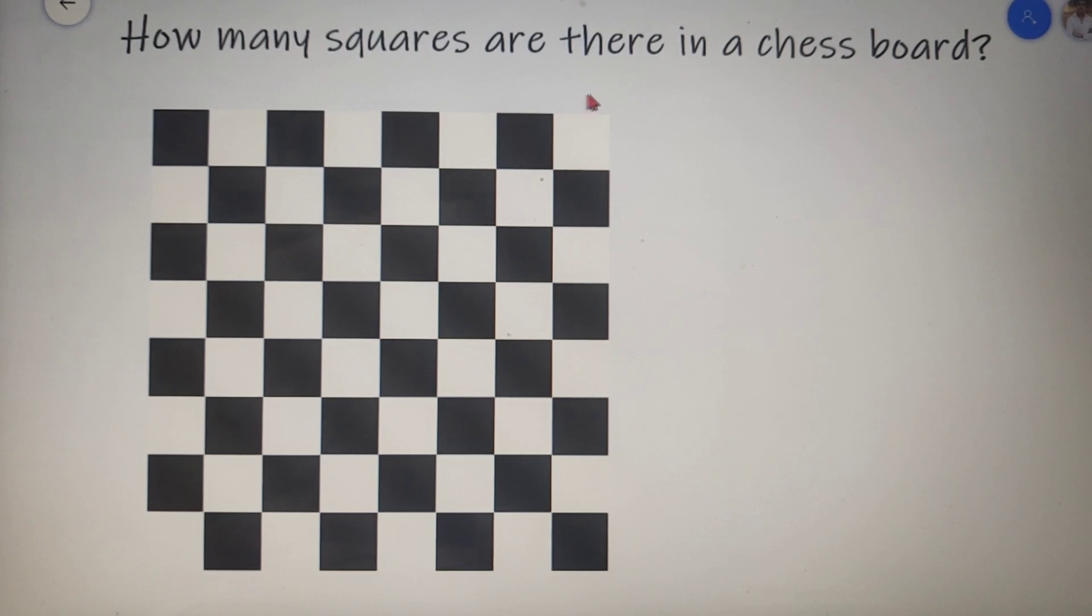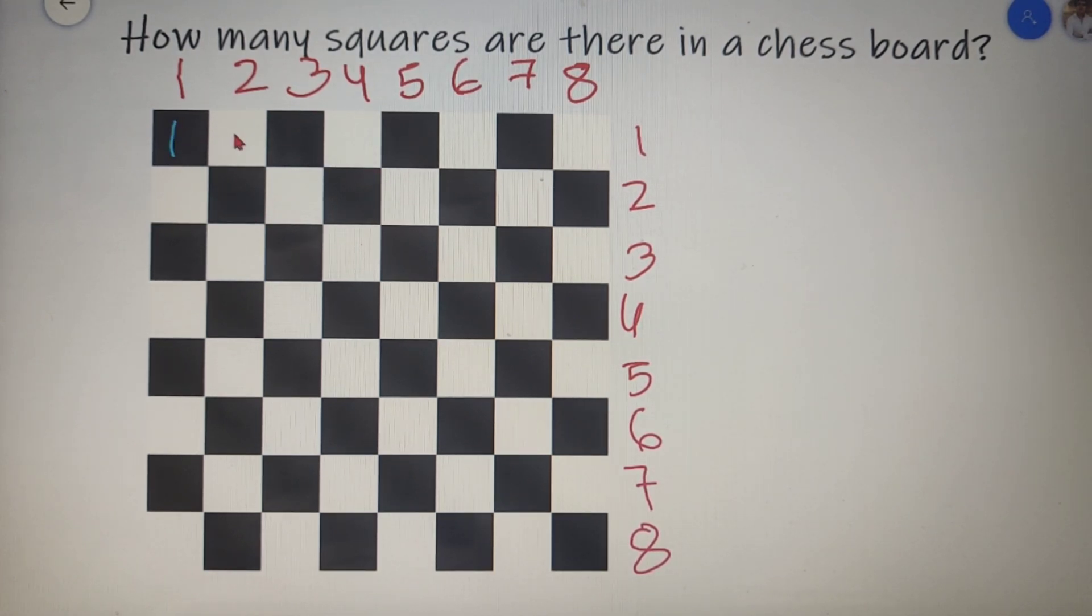So let's number all these rows and columns from 1 to 8 one by one. So we have numbered all the rows and columns and now if I start numbering all these squares one by one starting from 1, 2, 3 and all the way up to the last square, I will find that it goes up to the number 64.